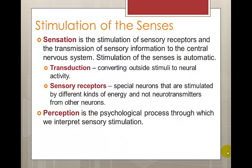There is so much information in the world outside of the body and the brain. That information has to have a way to get into the brain where it can be used to determine actions and responses. The way into the brain is through the sensory organs and the process of sensation, which is why we talk about this in psychology. Sensation occurs when special receptors in the sense organs are activated, allowing various forms of outside stimuli to become neural signals in the brain. This process of converting outside stimuli, such as light, into neural activity is called transduction.